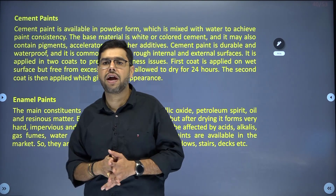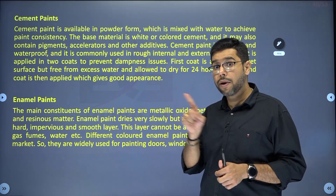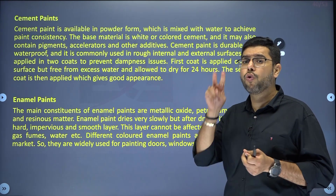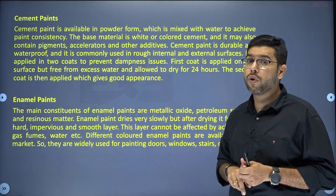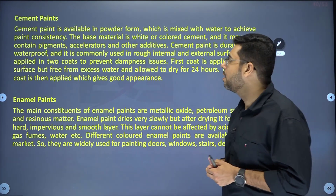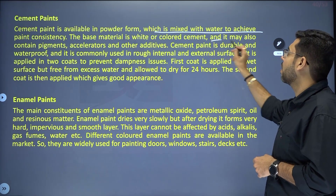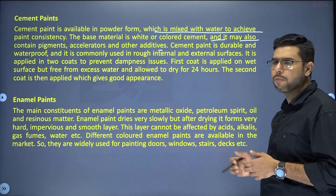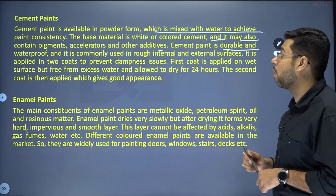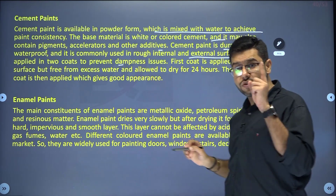Cement paint — as the name suggests, it contains cement. It contains white and colored cement; water is used as thinner. We mix the cement solution and apply it on rough surfaces. We can never use cement paint on smooth surfaces. It can be used for both interior and exterior surfaces. It is very durable but takes time to dry. It is applied in two coats — the first coat takes 24 hours to dry, then you apply the second coat. It is available in powder form mixed with water; the base material is white or colored cement, and may also contain pigments, accelerators, and other additives.